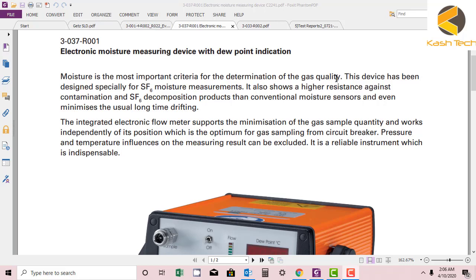If gas has more moisture, then it will be rejected. This device has been designed especially for SF6 moisture measurement. It also shows a higher resistance against contamination and SF6 decomposition products than conventional moisture sensors, and minimizes the usual long-time drifting. So not only moisture, it's also checking the contamination and decomposition of the gas.